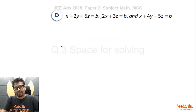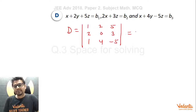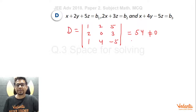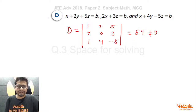Now let's go for option D. Here also, the determinant D formed by the coefficients of x, y, z as its columns turns out to be 54 — again not zero. So no matter what b1, b2, b3 are, this system of linear equations will always have a unique solution, meaning at least one solution, for all column vectors [b1, b2, b3] belonging to set S. Hence option D is also correct.